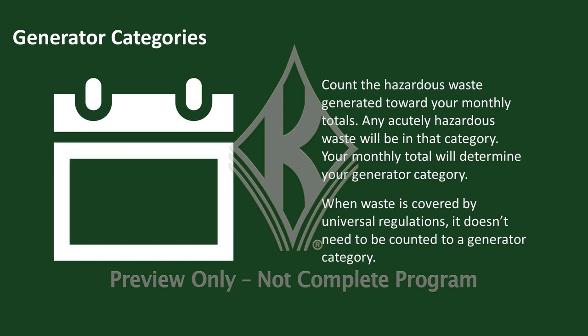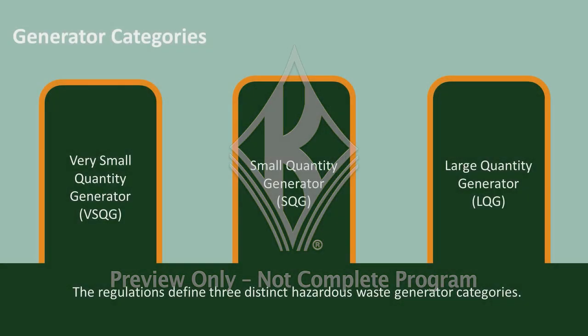However, if a waste is subject to the Universal Waste Regulations, it does not need to be counted toward a generator category. The regulations define three distinct hazardous waste generator categories: Very Small Quantity Generator (VSQG), Small Quantity Generator (SQG), and Large Quantity Generator (LQG).